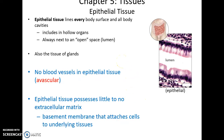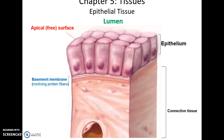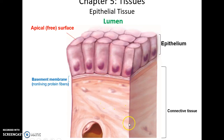Epithelial tissue also makes up glands. Epithelial tissue is avascular — it has no blood vessels — and has very little or no extracellular material, except for the basement membrane that helps to attach its cells to underlying tissues. The epithelial cells have an apical surface next to the lumen or open space. They lie on the basement membrane, which is non-living protein fibers that help attach them to the underlying connective tissue, which does have blood vessels.